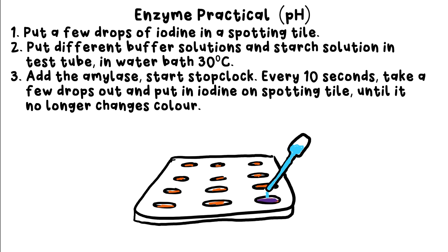Keep doing this every 10 seconds, though, and eventually the iodine will stop changing color. Step four: multiply the number of spots it took to get to that point by 10. This gives the total time taken for all of the starch to be broken down.